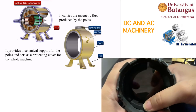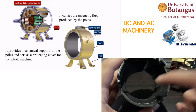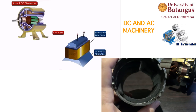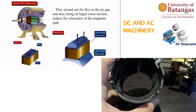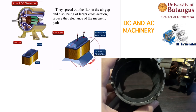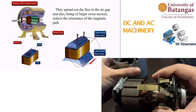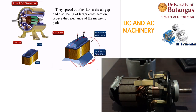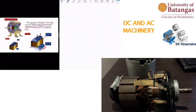The purpose of the pole cores or field poles is to spread out the flux in the air gap, and being of larger cross-section, they reduce the reluctance of the magnetic path. To understand reluctance, a magnetic circuit — like an electric circuit — has three basic components: MMF (magnetomotive force), flux, and reluctance.